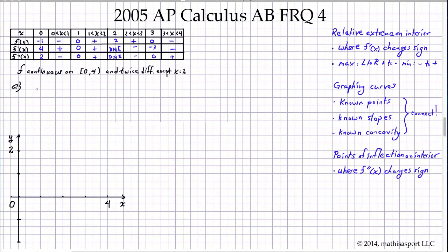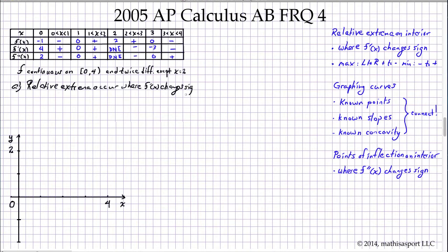Relative extrema occur where the derivative changes sign. So let's look along the line for f prime of x. It's positive, still positive. It goes to zero, but then it goes back positive. So note that there's no sign change there.